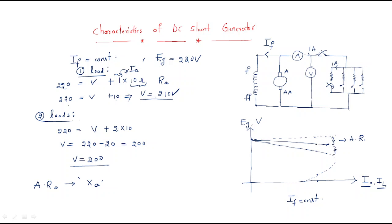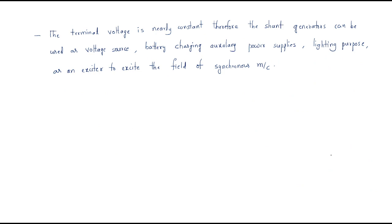If we consider the armature drop — the Ia × Ra drop — we get another curve. So the terminal voltage ideally follows the upper curve, but as load increases it drops. Without considering any drop the voltage follows one curve; considering only armature reaction gives another; and considering both armature reaction and the resistance drop gives a third, lower curve.